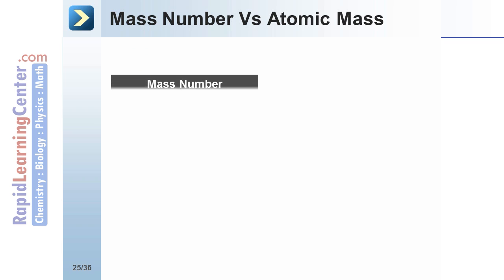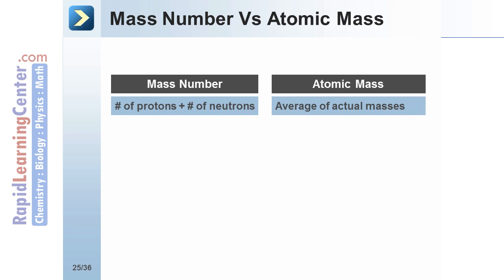Many people confuse mass number with atomic mass. The mass number is the sum of the number of protons and number of neutrons. The atomic mass, found on the periodic table, is the average of the actual masses found in nature.